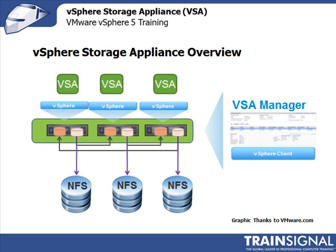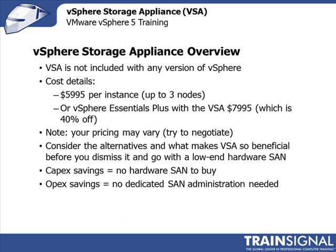The VSA presents storage as NFS, and then you can store your virtual machines on it. This way you don't have to buy a separate hardware-based storage area network. The VSA is not included with any version of vSphere — it's a completely separate add-on that you purchase. The cost details are $5,995 US per instance, which can span either two or three nodes.